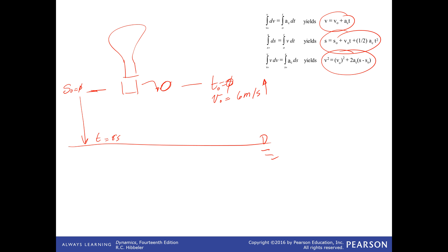I need to do two things: first, calculate the velocity at time equals 8 seconds. Then, find the altitude of the balloon — not the bag — at T equals 8 seconds. Remember that at T equals 8 seconds, the balloon had continued going up from the release point, so you have the distance the balloon went up plus the original elevation distance.